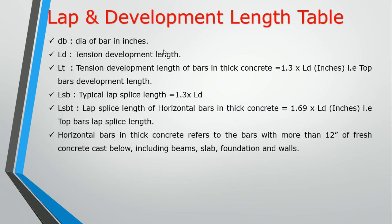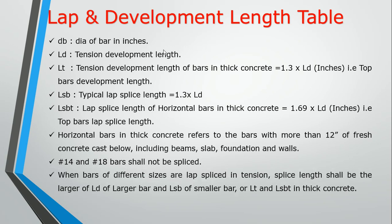Thick concrete has a specific definition. For No. 4 and No. 18 bars, splices are covered in the next section. There are different types of splices: mechanical splices and welded splices. When bars of different sizes are lapped and spliced in tension, the splice length shall be the larger of: LD of the larger bar and LSB of the smaller bar, or LD and LSBT in thick concrete.